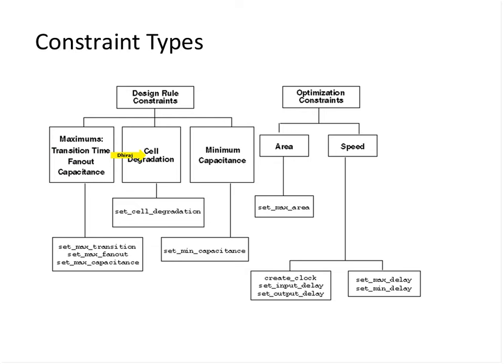Cell degradation is not exactly used by Design Compiler itself — it is used by DC Topographical mode — so it is outside the scope of this course. Minimum capacitance is very rarely used. We will focus on the maximum constraints for this lecture. Optimization constraints cover area and speed — power will be discussed briefly but is not the main focus. The relevant commands are: set_max_transition, set_max_fanout, set_max_capacitance, set_max_area, create_clock, set_input_delay, set_output_delay, and set_max_delay.